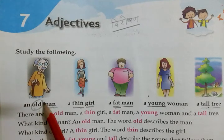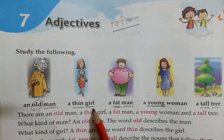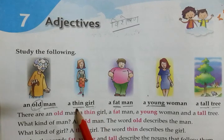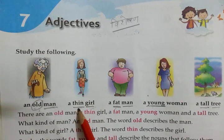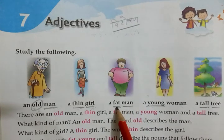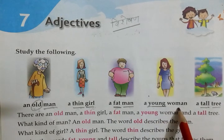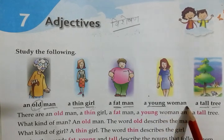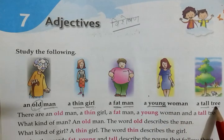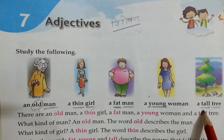Let's see through examples. A thin girl — girl is a noun. Girl kaisi hai? Thin, patli. Thin is adjective. A fat man — man kaisa hai? Fat, mouta. Fat is adjective. A young woman — woman is noun. Young is adjective. A tall tree — tree kaisa hai? Tall, bahut lamba. So these are adjectives.